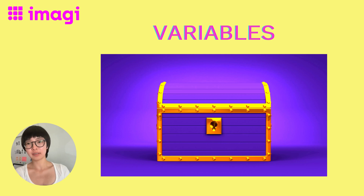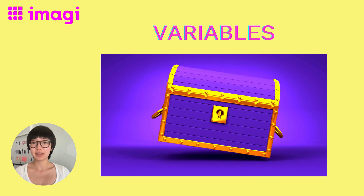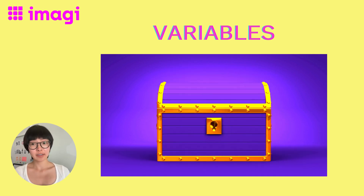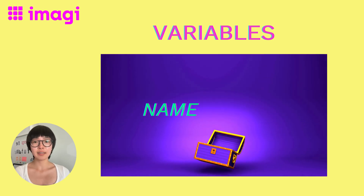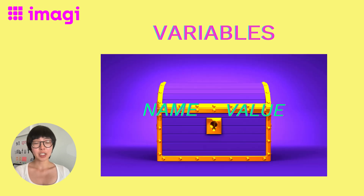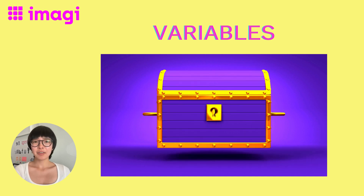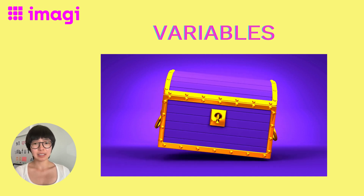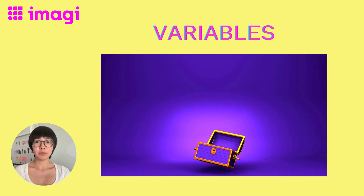Now let's learn a little bit about variables. Imagine variables as your own special virtual treasure chest, where you can store all sorts of awesome goodies — or in the world of coding, data. Variables have two key parts. First, there's the name — think of it like the tag on your treasure chest. Then there's the value — that's the precious item you've tucked away inside. Pick variable names that give you a clue about what's inside. It's kind of like naming your skateboard 'speedster' instead of 'fluffy.' It just makes sense.